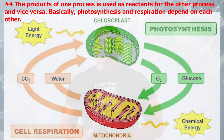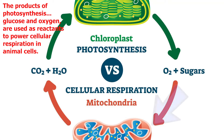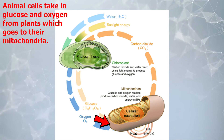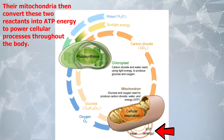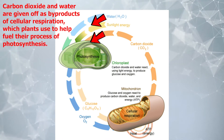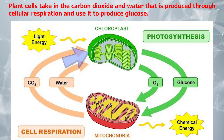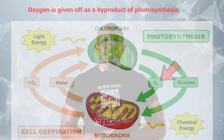Number four: the products of one process are used as reactants for the other process and vice versa. Basically, photosynthesis and respiration depend on each other. The products of photosynthesis — glucose and oxygen — are used as reactants to power cellular respiration in animal cells. Animal cells take in glucose and oxygen from plants, which goes to their mitochondria. Their mitochondria then convert these two reactants into ATP energy to power cellular processes throughout the body. Carbon dioxide and water are given off as byproducts of cellular respiration, which plants use to help fuel their process of photosynthesis. Plant cells take in the carbon dioxide and water produced through cellular respiration and use it to produce glucose. Oxygen is given off as a byproduct of photosynthesis. For more on cellular respiration and photosynthesis, check out the videos above.